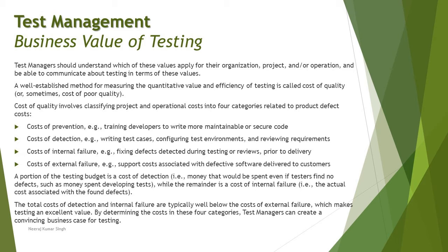The second category is cost of detection — the effort required by approaches like reviews to detect defects, and dynamic execution, which means running test cases, is another detection approach. First you try to prevent defects by training people in their respective jobs, then you invest in detecting as many defects as possible and resolving them early. The third category is cost of internal failure: if something critical is found and the product fails internally before release, there is a cost to rework and fix those issues. Fixing defects detected during testing or reviews prior to delivery is called the cost of internal failure.